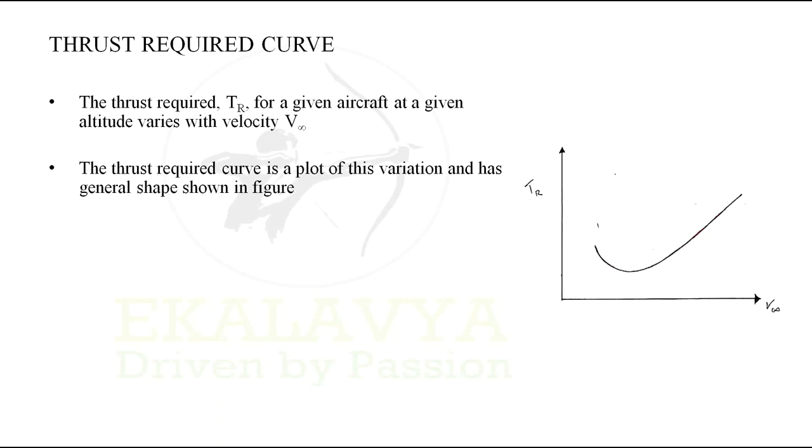On x-axis we have velocity V infinity. On y-axis we have thrust required TR. Steps to plot thrust required curve: For plotting thrust required curve we need to calculate thrust required for various velocities and join them.